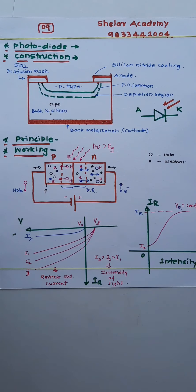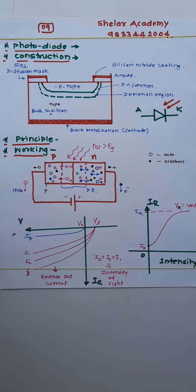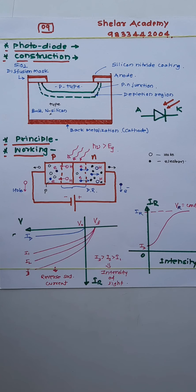Hello students, this is the 9th lecture on the topic of semiconductors. In this lecture, let us discuss about the electronic device called a photodiode. This is a special purpose diode designed to operate in reverse bias mode, and this device converts light energy into electrical energy.